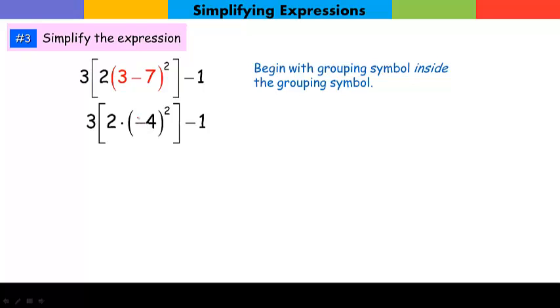So the first thing we're going to do is 3 minus 7, which gives me a negative 4. Notice I keep that parentheses around that negative 4. Now I have an exponent here. I'm raising negative 4 to the second power, and I get 16.